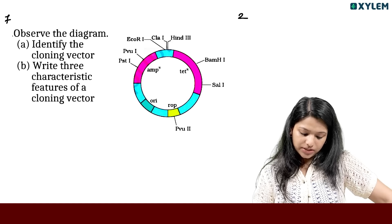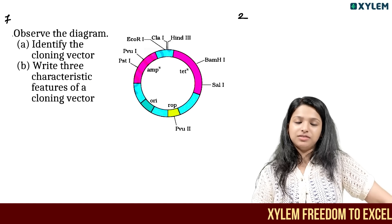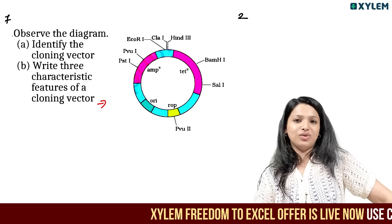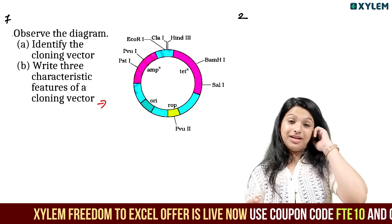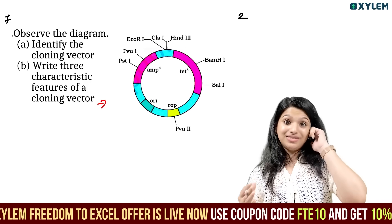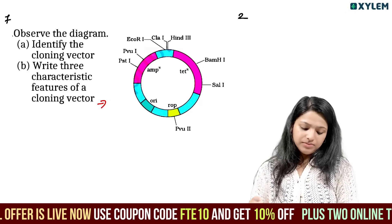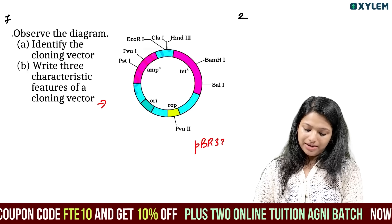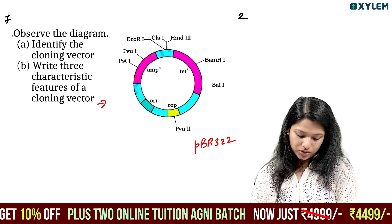Observe the diagram and identify the cloning vector. Write 3 characteristic features of a cloning vector. Important features include the selectable marker and the cloning site (MCS). This is an important diagram of PBR322.